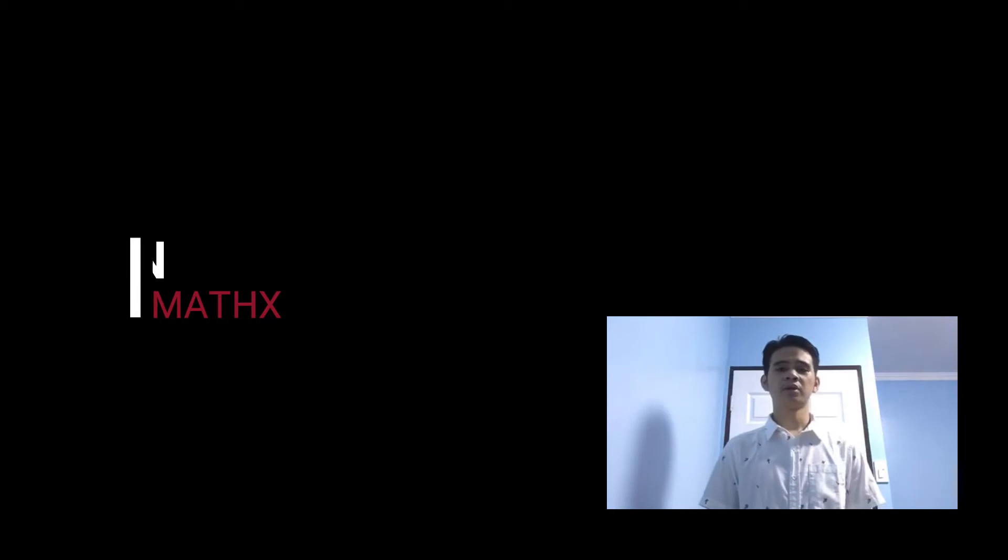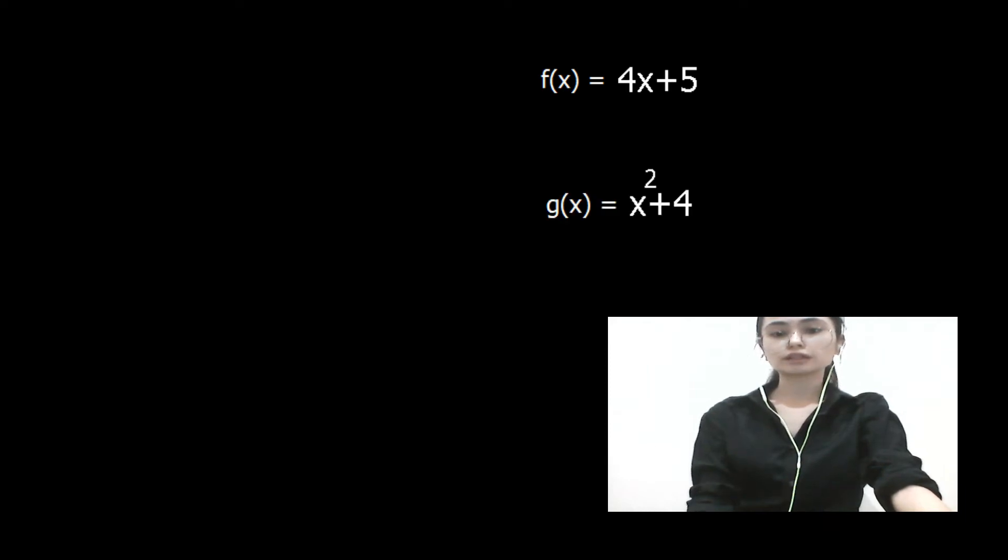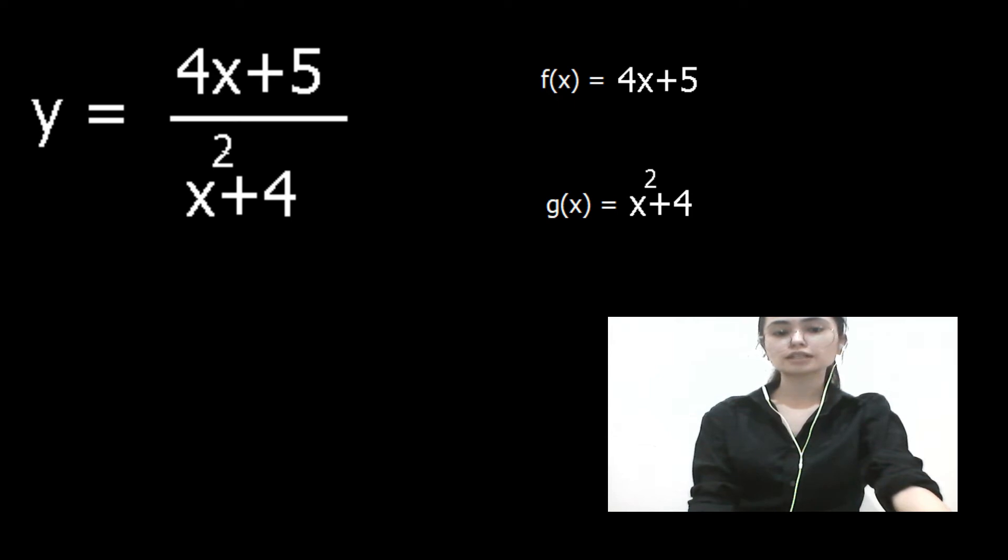Now, our problem in order to find our function is here. y equals 4x plus 5 divided by x squared plus 4. Now, since it's division, we need to understand that there are certain rules in differentiation. In this case, we shall use the quotient rule. Take note that there are two parts in this equation, the f of x and the g of x. In the numerator, 4x plus 5 is considered as the f of x and the 5 as the constant.